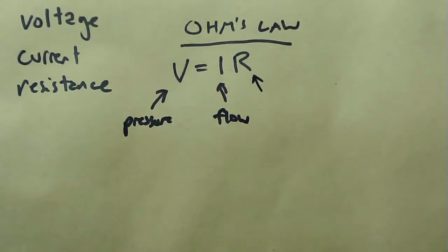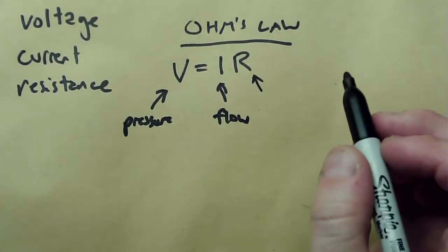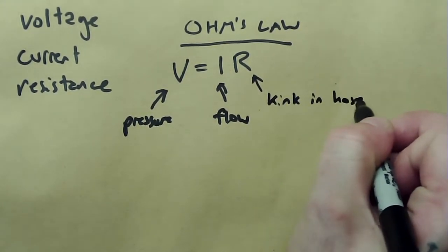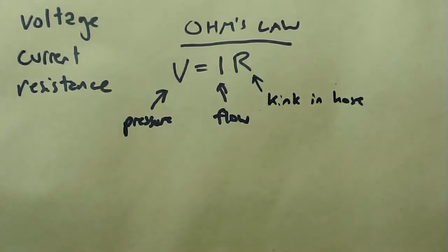Resistance is an impediment to flow. So we can think of this as a kink in a hose, maybe. Or we can think of it as just the characteristic of a hose to resist the flow of water. So when we're talking about the flow of water, we now need to talk about elevation.